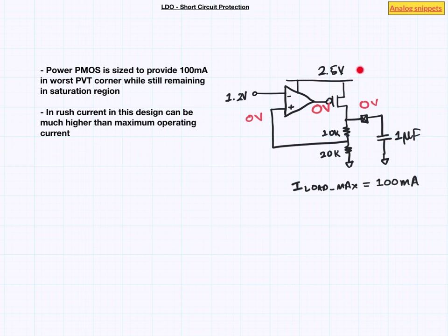Now this large inrush current can have couple of adverse effects in your design. Your input rail may not simply be able to supply this large surge of current and it may cause input rail to droop and in some cases catastrophically so. This input rail may be going elsewhere in the system and the droop may cause problem there.